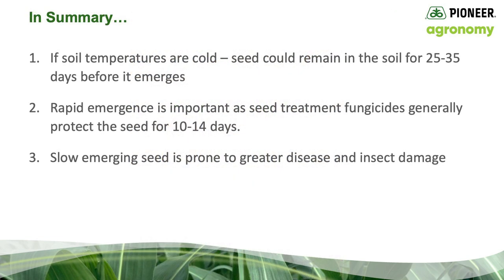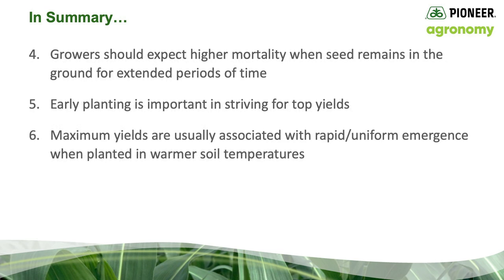In summary: number one, if soil temperatures are cold, seed could remain in the soil for 25 to 35 days before it emerges. Number two, rapid emergence is important as seed treatment fungicides generally protect the seed for only 10 to 14 days. Number three, slow-emerging seed is prone to greater disease and insect damage. Number four, growers should expect higher mortality when seed remains in the ground for extended periods of time. Number five, early planting is really important in striving for top yields. And number six, maximum yields are usually associated with rapid, uniform emergence when planted in warmer soil temperatures.